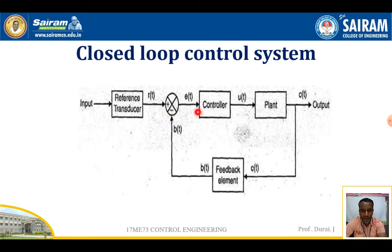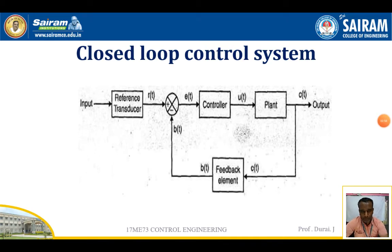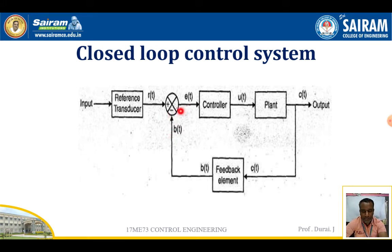The reference signal is used to control the error signal and also provides the required input signal to the controller. Finally, you can get a constant output with the help of this closed-loop control system. The main function of the feedback system is to compare the output signal with the input signal and provide the error signal.